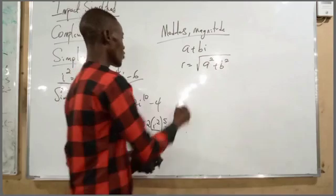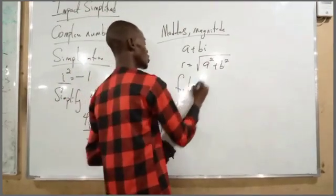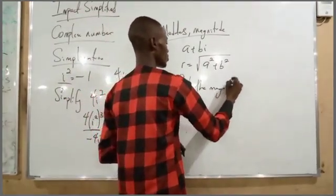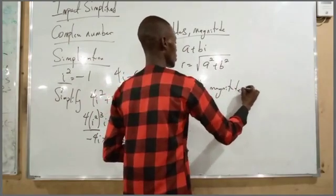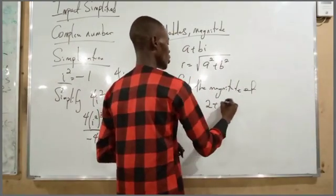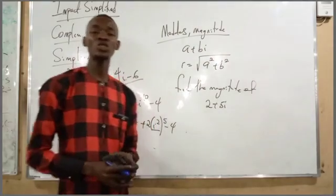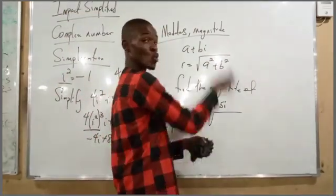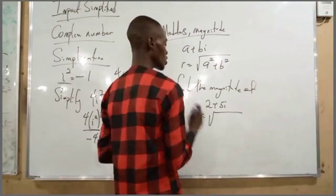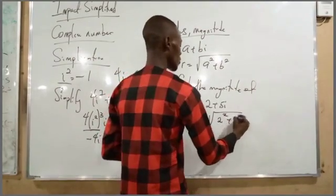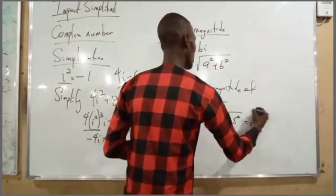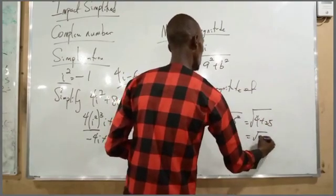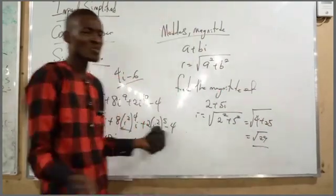For instance, find the magnitude of 2 plus 5i. That gives R equals the square root of 2 squared plus 5 squared, which is the square root of 4 plus 25, which equals the square root of 29. It's simple.